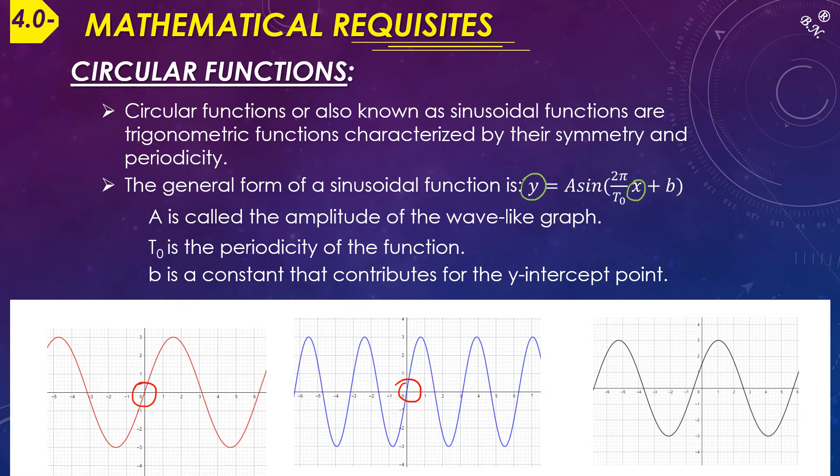These two functions start at zero—when x is zero, y is also zero—while this curve starts from a certain point which is not zero. All these graphs are periodic and symmetric. You notice they move above the axis the same way they move below it. That's why they're referred to as wave-like shapes or sinusoidal functions.